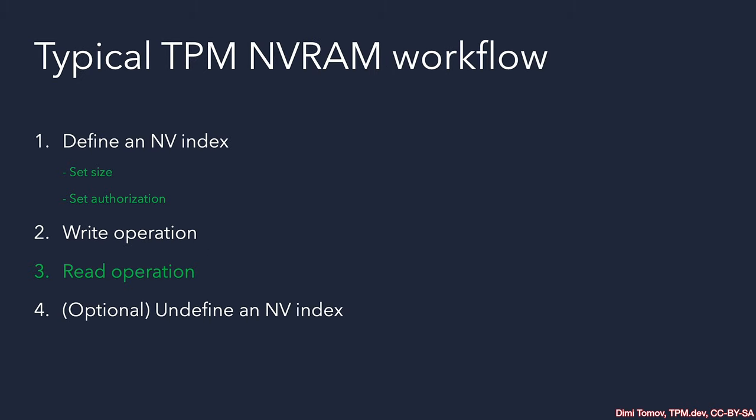Here is a typical workflow for using the TPM's NVRAM. First we need to define an NV index, which is public information about the size of our data and what type of authorization we are going to use. Once we have an NV index, we can perform one of the write operations — this could be a write in bulk, an increment counter, or one of the other two types. Remember that some write operations are not possible depending on the type of NV index chosen.